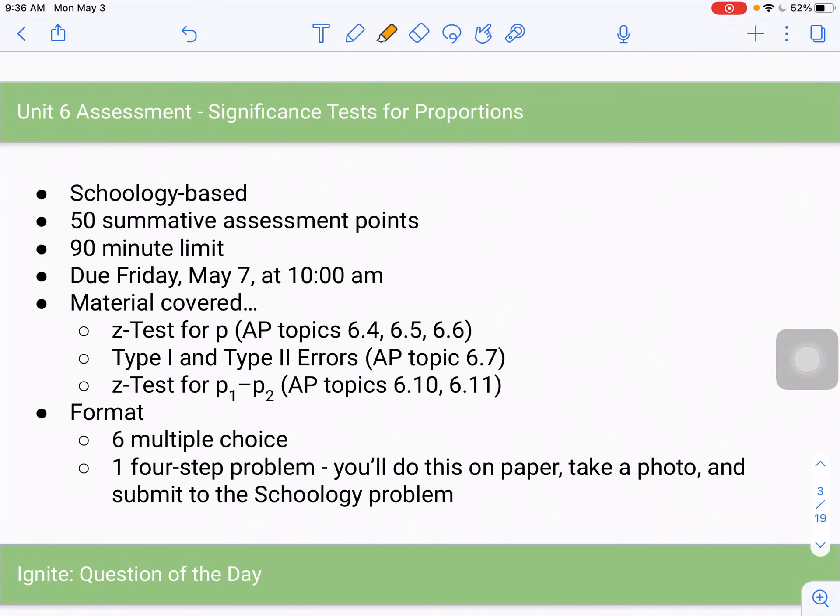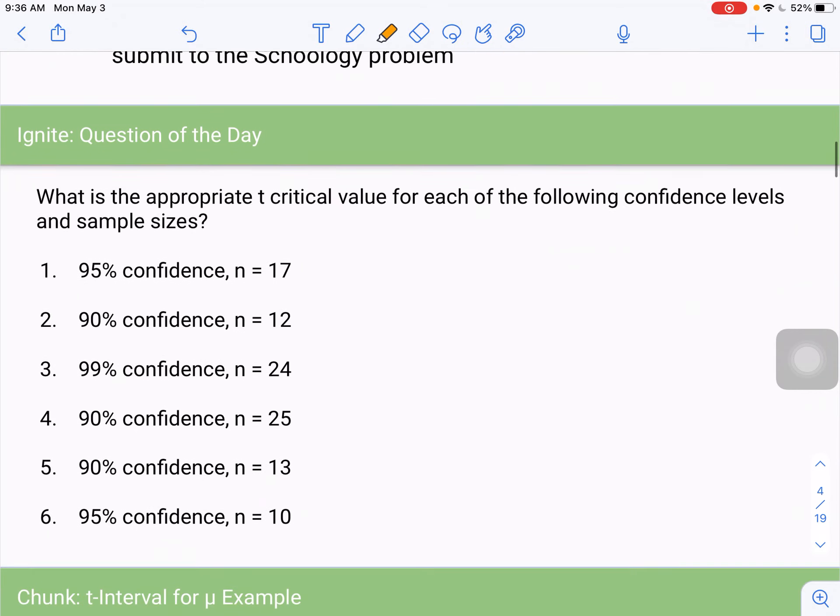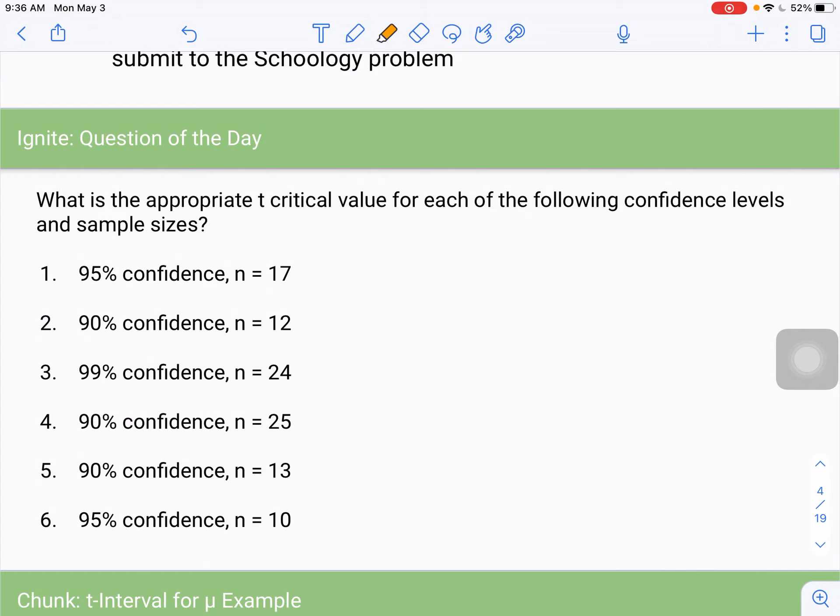I'll then set up the asynchronous work for the week. Okay, so unit six assessment, again, this is due Friday, May 7th by 10. It is Schoology-based, 50 summative assessment points, 90-minute time limit, covers these topics. You'll see six multiple choice and then one four-step free response question that you'll do on paper, take a photo, and then submit to Schoology. Send me an email if you have any questions about the unit six assessment, but again, that is due on Friday of this week. All right, next up is our Ignite. So you're going to do this, you can just do this on paper. You're going to submit your answer to Schoology to get your Ignite points for the day.